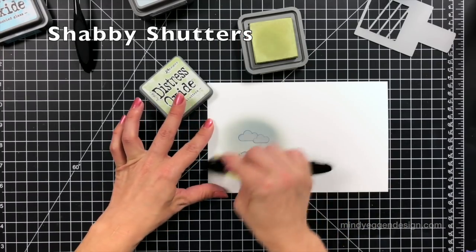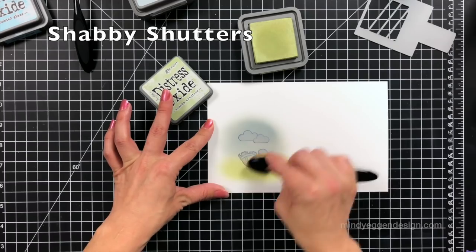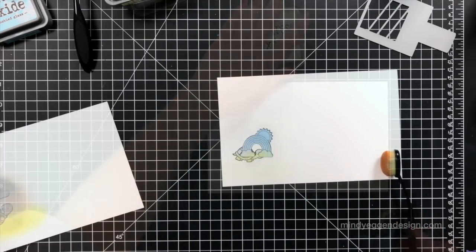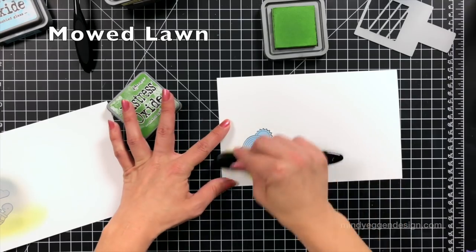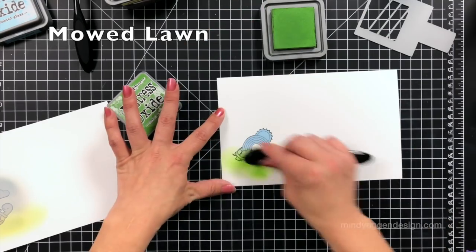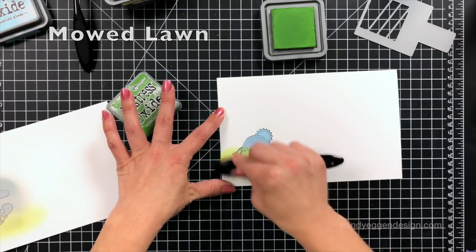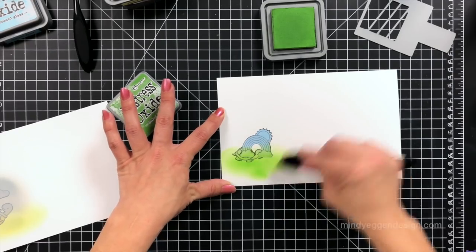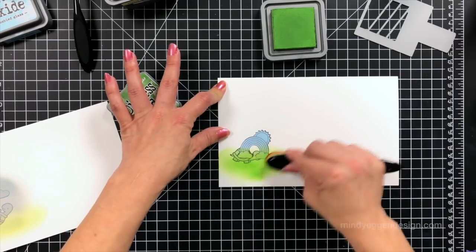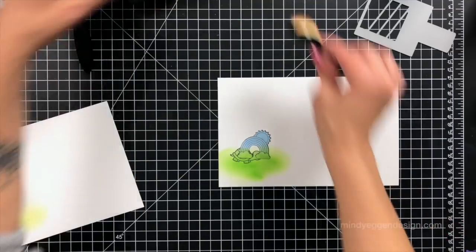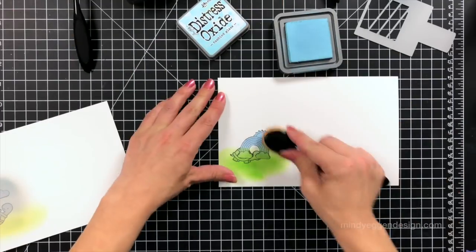You could also stamp the raindrops so that it looks like it's raining on him, but I was just kind of going for gloomy. Then I'm adding shabby shutters, so kind of a dull green. I mean it's a pretty green, but it went really well with my gloomy background. Into our healthy and happy picture, I'm ink blending mowed lawn. That's a really nice bright green.